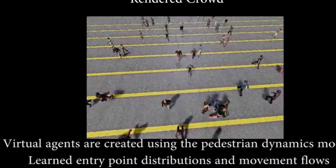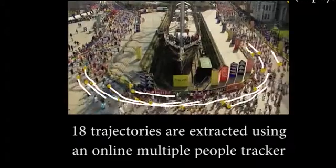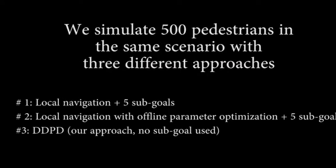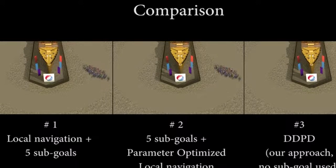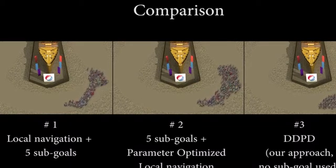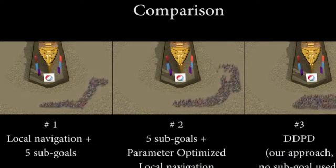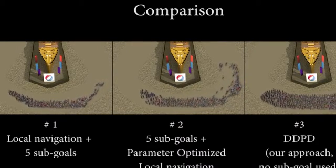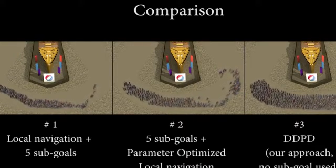The virtual pedestrians in this scene have the same movement pattern as the individual humans in the original video. In this high-density video, we extract 18 trajectories using an online multiple-person tracker. We simulate 500 pedestrians with the same scenario using three different approaches. In the first scenario, we use local navigation and specify five subgoals. In the second scene, we use local navigation but with offline parameter optimization and also specifying five intermediate subgoals. In the third scenario, we use our approach and no subgoal is used.